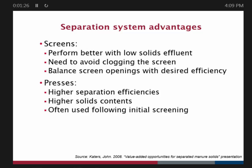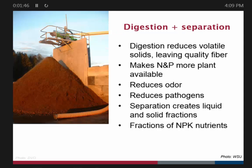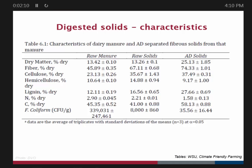A quick thank you to my co-authors, and a reminder that pictures shown don't imply endorsement for any particular purpose. We're focusing on digested solids and the value they can provide, looking at mechanical separation techniques — primarily screens, presses, and centrifuges. Digestion and separation work together: digestion removes volatile solids, leaves high-quality fiber, makes nutrients more plant available, and reduces odors and pathogens. The fiber — cellulose and hemicellulose — is enhanced in anaerobic digestion solids.